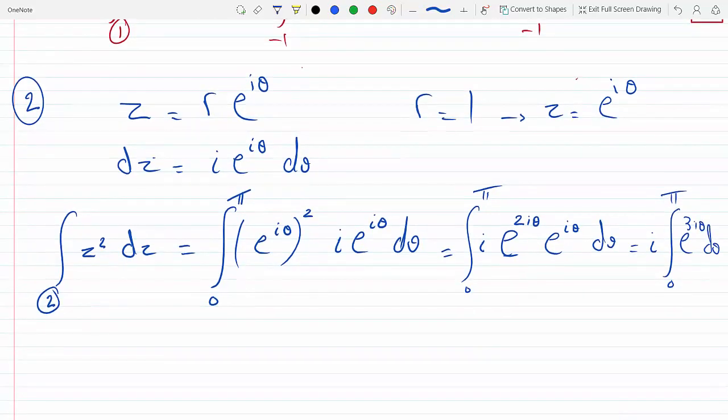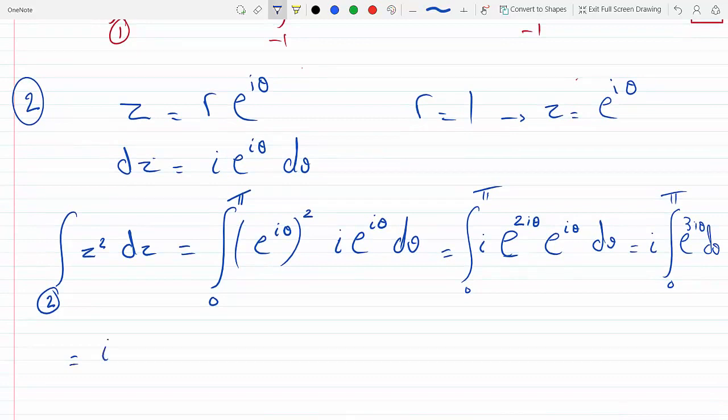This is a straightforward integral. This is just e to the three i theta, and then we divide by the chain rule, which is three i. We divide by the chain rule, which is three i, and we could just cross out these two i's or multiply up and down by i, so we get minus one over minus one.